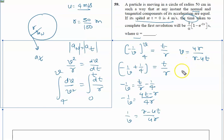Put the value of r: v equals 4, r is 50 by 100, which is 0.5, divided by 0.5 minus 4t. Divide by 0.5: this is 2 divided by 1 minus 8t.